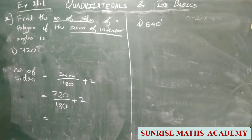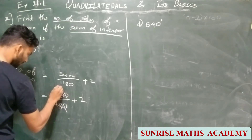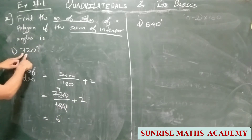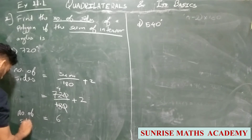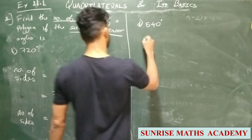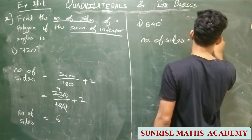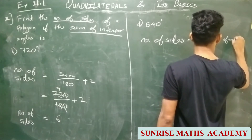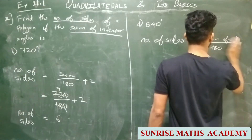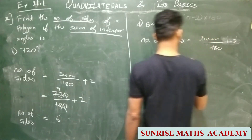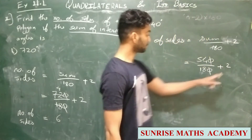720 ÷ 180 = 4, plus 2 gives 6. So if the sum is 720 degrees, the number of sides is 6. Next: sum = 540. Number of sides = (540 ÷ 180) + 2 = 3 + 2 = 5. So the number of sides is 5.